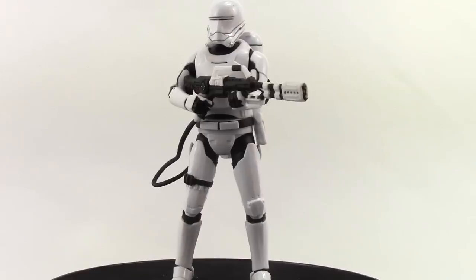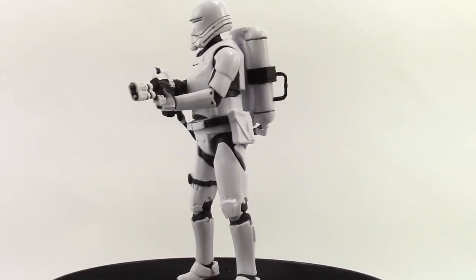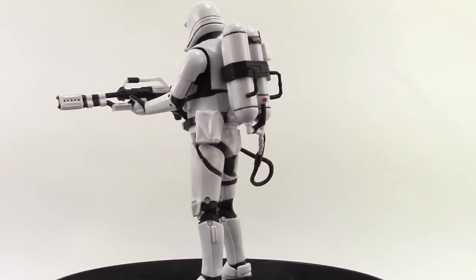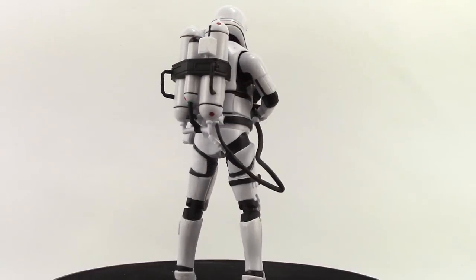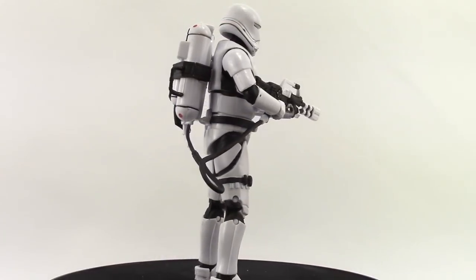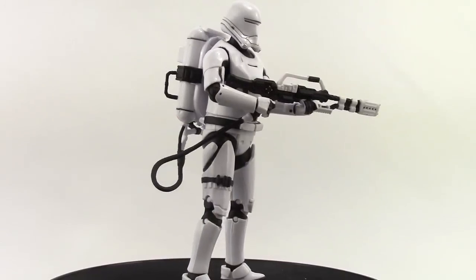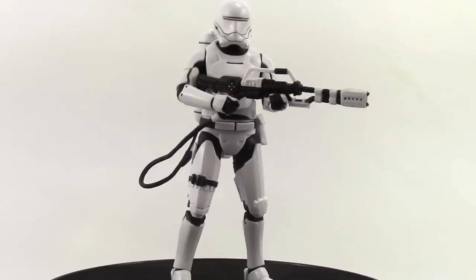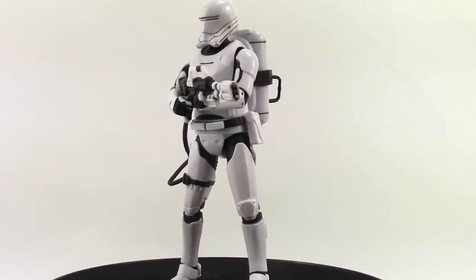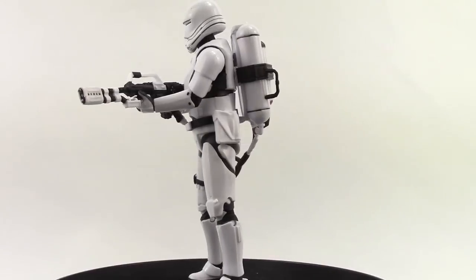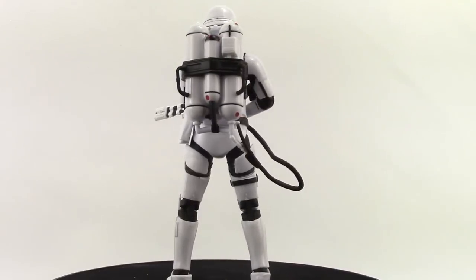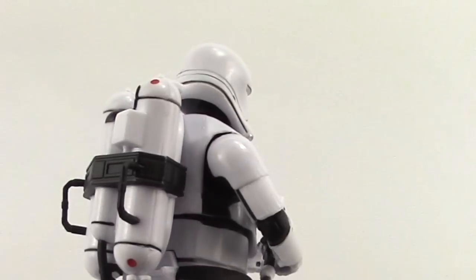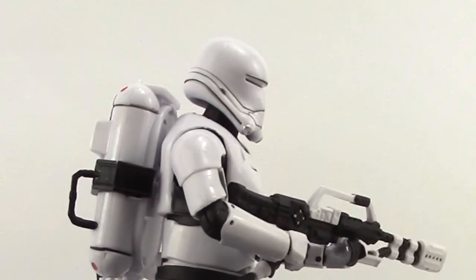For the figure itself, basic paint applications like we've seen with all the First Order Stormtroopers in this line. You've got white with black markings throughout the body. No detailed weathering or dirt on the armor—it's a very clean looking figure. The helmet has black markings and the eye slits are sculpted in, as well as the line work around the helmet.